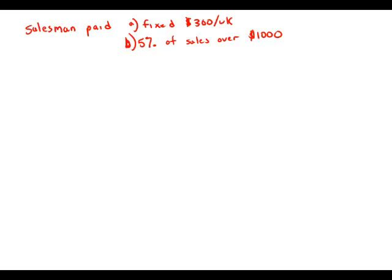Each week, a certain salesman is paid a fixed amount equal to $300 plus a commission equal to 5% of the amount of his sales that week over $1,000. What is the total amount that the salesman was paid last week? In other words, his total wages for the week: if the sales are under $1,000, then his wage for the week is $300.